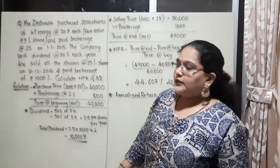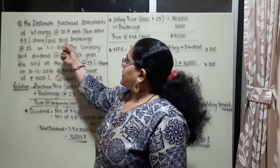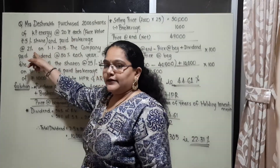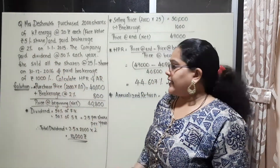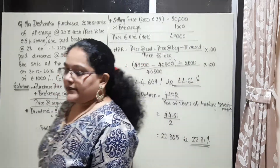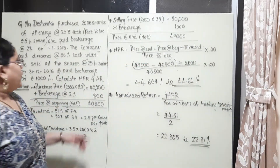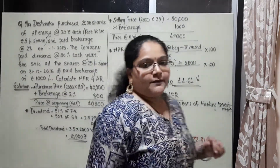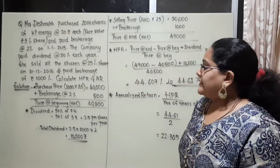Here the concept of brokerage differs. When she purchased, brokerage was given as 2%, whereas here the brokerage on sale is given as a flat 1000 rupees. Calculate her holding period return and annualized return.